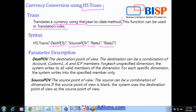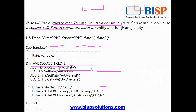The destination point of view could be a combination of any account, custom 1, 2, 3, 4, or ICP dimension member. If you do not specify, it takes the default — all valid members of the respective dimension. The source point of view can be a combination of any dimension, and if you leave it blank, it takes the same value as the destination point of view. Rate 1 and rate 2 are currency exchange rates — rate 1 minus rate 2 is the currency rate. The rate can be a constant or an exchange rate account.